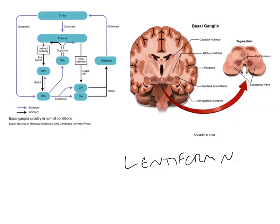The lentiform nucleus is composed of three important components. The superficial-most part is the putamen. Going one layer deeper we find the globus pallidus external segment, and one layer deeper still is the internal segment of the globus pallidus. So the lentiform nucleus is made up of three components: putamen, globus pallidus external, and globus pallidus internal — these are major parts of the basal ganglia.